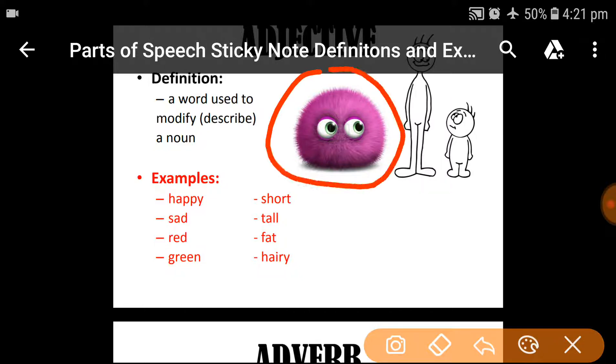For example, I am saying, this one is purple in color. Purple is adjective. This is smaller. Small is adjective. This is tall. Tall is also adjective.